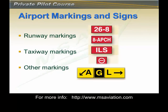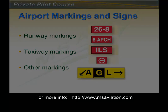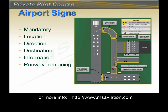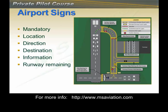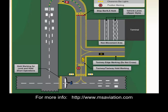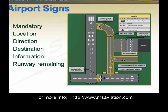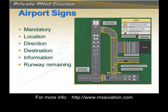We can categorize airport markings and signs into three broad categories: runway markings, taxiway markings, and other markings. We can also categorize airport signs into six different parts: signs indicating mandatory compliance, location signs, direction signs, destination signs, information signs, and runway distance remaining signs. Let's look at each of them and some examples.